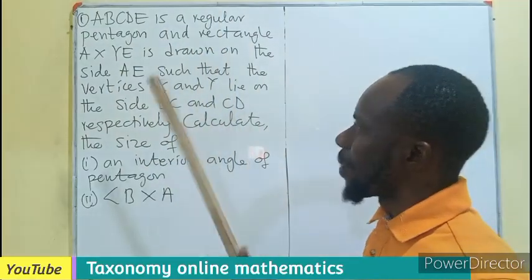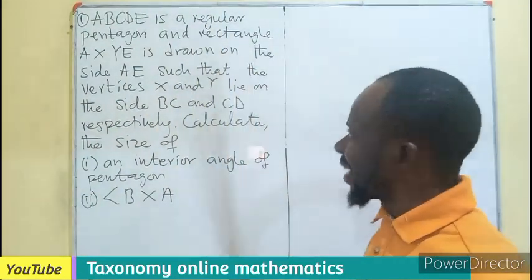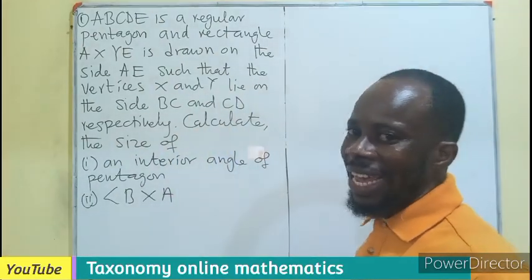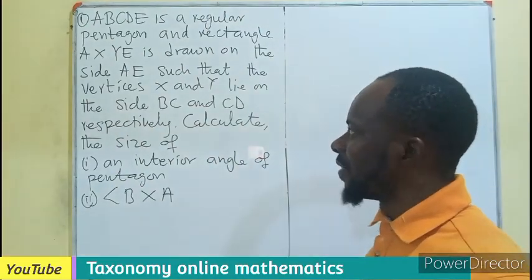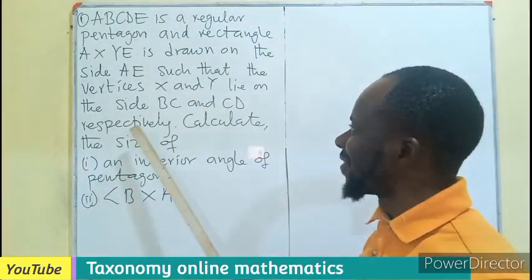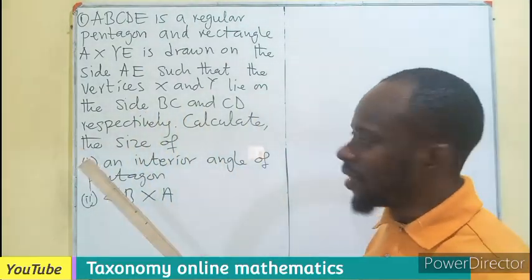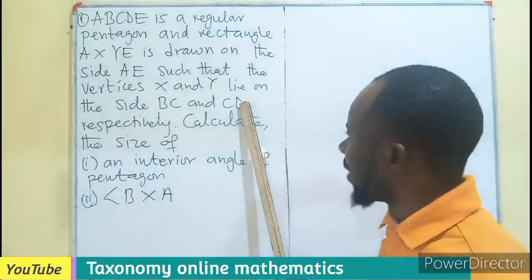ABCDE is a regular pentagon. Pentagon has five sides, right? And a rectangle AXYE is drawn on the side AE of the pentagon, such that the vertices X and Y lie on the side BC and CD respectively. Meaning X is lying here, then Y is lying here.